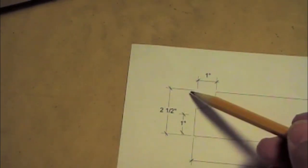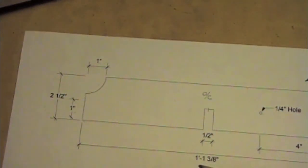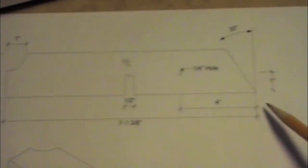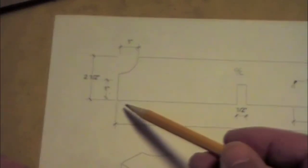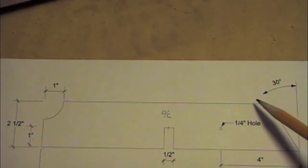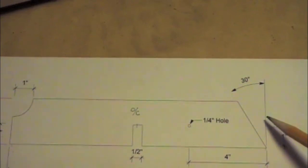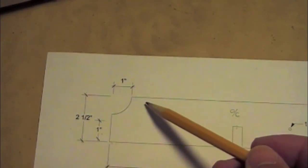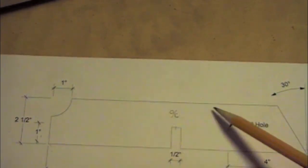The piece of wood is two and a half inches wide by one foot one and three eighths inches long from tip of the point to back here. I don't really care what this measurement is back here because if I get the length right and do the thirty degrees and the one inch, this will end up accurate.